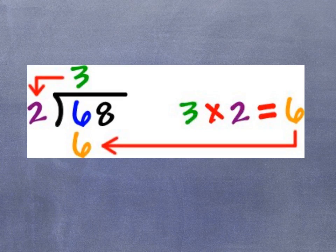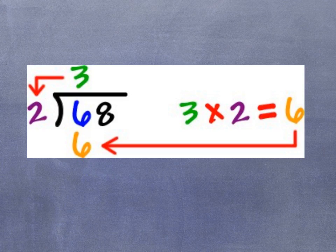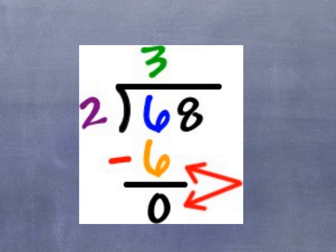The next step is to take 3 times 2, which gives me 6. Then I subtract 6 minus 6, which equals 0.